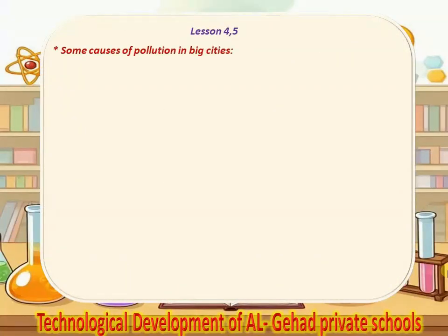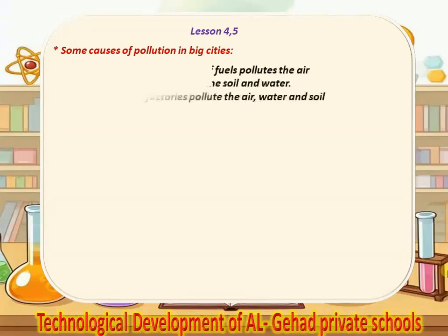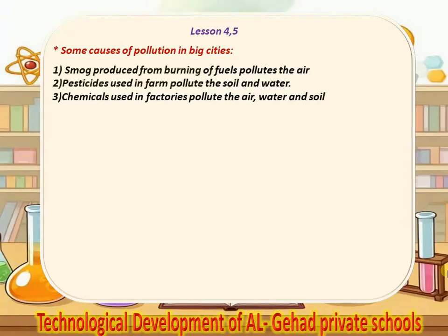Lessons 4 and 5: some causes of pollution in big cities. Number 1, smoke produced from burning of fuels pollutes the air. Number 2, pesticides used in farms pollute the soil and water. Number 3, chemicals used in factories pollute the air, water and soil.